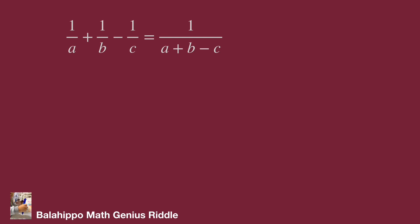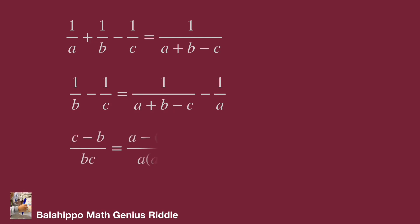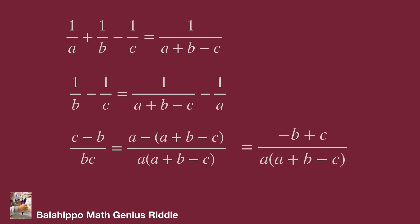Reducing the fractions on both sides and simplifying the terms, the equation becomes: (c minus b) over bc equal to minus (b minus c) over a times (a plus b minus c).